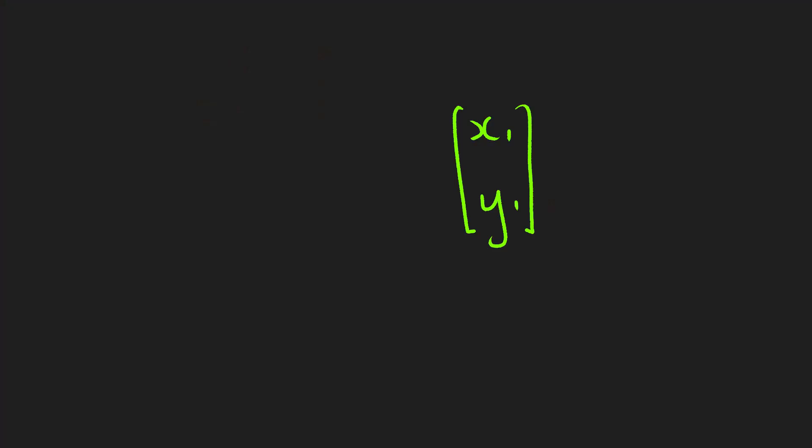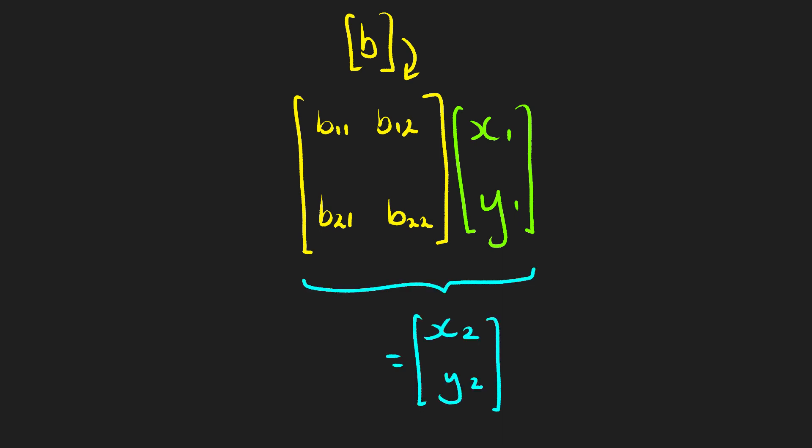So in terms of matrix algebra, then what we've done is we've taken our vector x1, y1, and we've multiplied that by our matrix B with all of the b coefficients in it. And that's given us x2, y2.